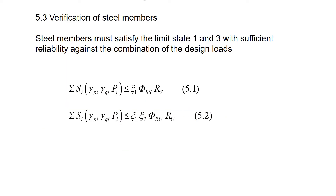Section 5.3: Verification of Steel Members. The steel members must satisfy Limit State 1 and 3 with sufficient reliability against the combination of design loads, which is verified by these equations. The left side is associated with the applied load, and the right side the resistance. The principle is: the applied load must be within the resistance.